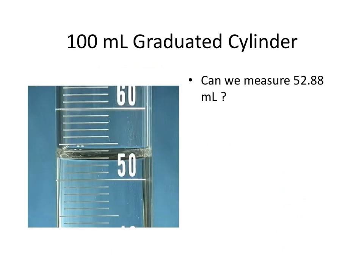Notice in the graduated cylinder, the scale goes the other way — from 50 to 60. Here's the meniscus, reading at about 52 point something. The gradations are 50, 51, 52, 53, so the bottom of the meniscus is 52 point something — I'd estimate 52.8. Can we measure 52.88? No. We can only measure to 52.8. So the graduated cylinder is not as precise as the burette.